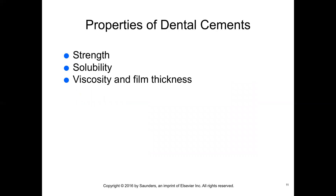Properties of dental cements vary from one cement to another. No one cement is ideal for every clinical situation — the clinician must consider both physical and biological properties when selecting cement for each procedure. Cements are brittle materials with good compressive strength but limited tensile strength. They must be strong enough to resist the forces of mastication. Compressive, tensile, and flexural strengths are all important considerations for different cement applications.